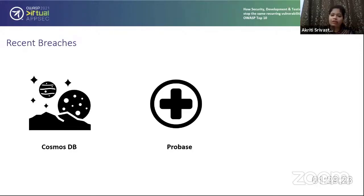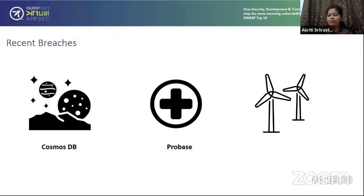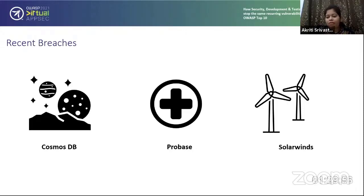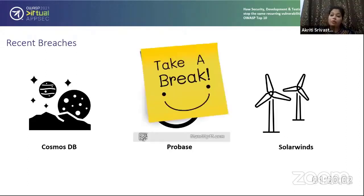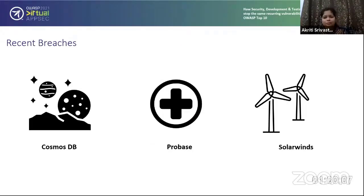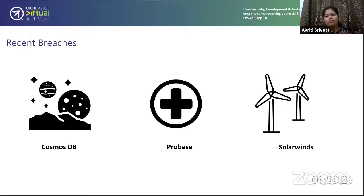Next in the queue: any guesses? This is SolarWinds, which was very popular last year. Attackers were able to put malicious code into the SolarWinds system, and through that they were able to get into other companies as well. They were able to pivot into Microsoft and gained internal code — including some Azure code — and using that they were able to gain AAD privileges, higher privileges, and were able to forge user tokens.